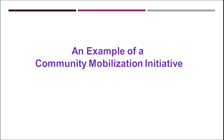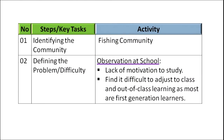We will now apply all these steps in an illustration. The example presents a community mobilization initiative in three columns: the number indicating the step, the step itself, and the specific activity or task happening at each stage. In this illustration, the community identified is the fishing community.